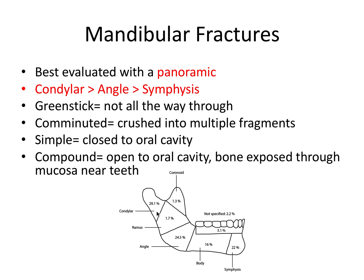Condylar neck fractures are most common because the bone dimension in this area is skinniest, and the condyle gets banged up against the glenoid fossa and has nowhere else to go. Commonly, a fall or blow to one side of the mandible causes a fracture in the angle region of the ipsilateral side and a fracture of the condylar region of the contralateral side. So if you fall on your right side, you can get a gonial fracture on your right and a condylar fracture on your left.